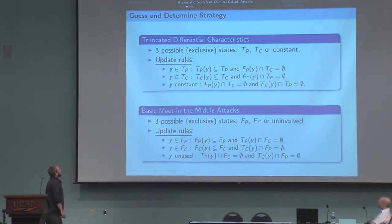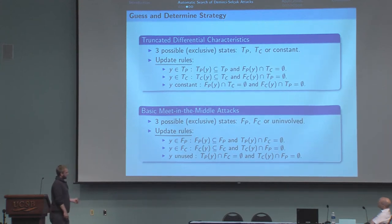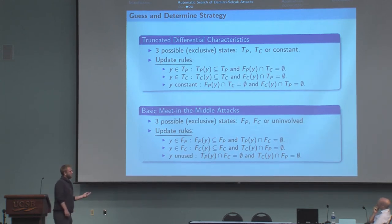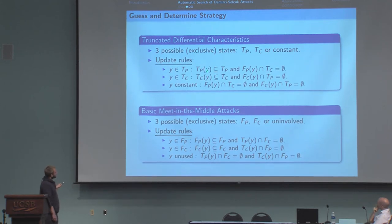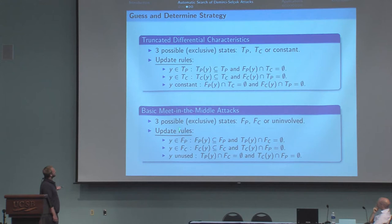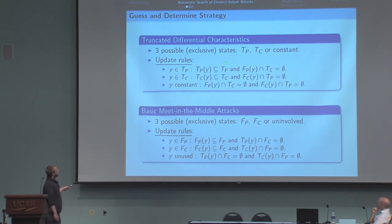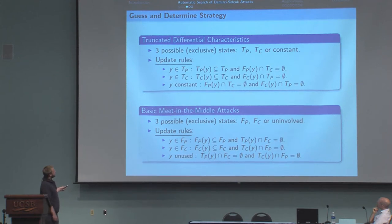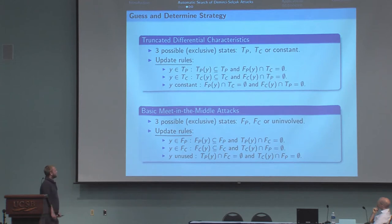To search for all the truncated characteristics and all the basic meet-in-the-middle attacks, we use guess-and-determine strategy on the state variables. You may note that both algorithms—both update rules for the guess-and-determine strategies—are very similar. And actually, if you take those update rules and switch T and P, you obtain those update rules.